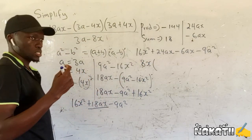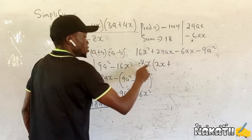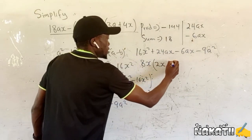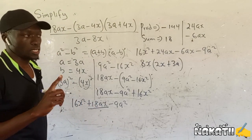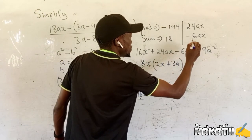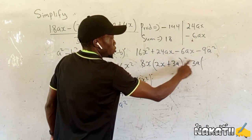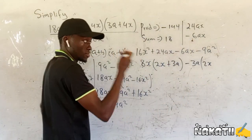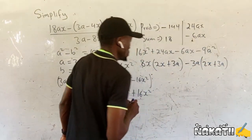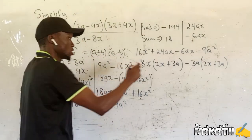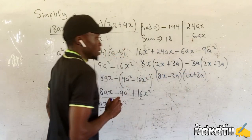Then you ask yourself: 8x goes into 16x squared how many times? It will go there 2x. Plus 8x goes here how many times? It goes there 3a. Then if you come here, you check what is common between negative 6ax and negative 9a squared — you're going to get negative 3a. Then you ask yourself, negative 3a goes here how many times? It goes there 2x. Then negative 3a goes to negative 9a squared how many times? It goes there positive 3a. You can collect these two and put them under one bracket. You're going to have 8x minus 3a and 2x plus 3a. This is the numerator.